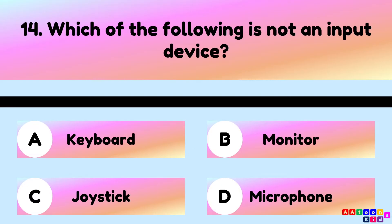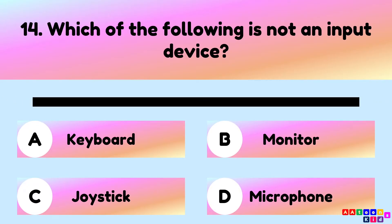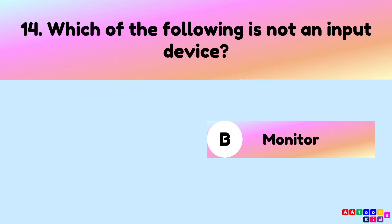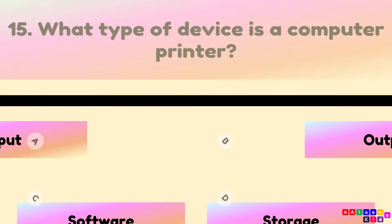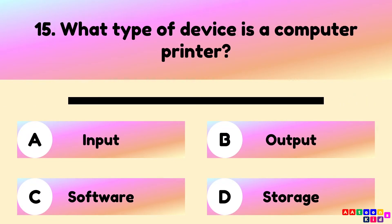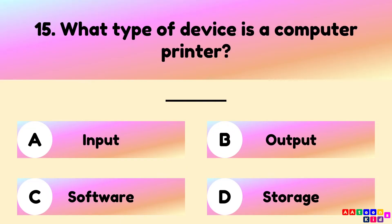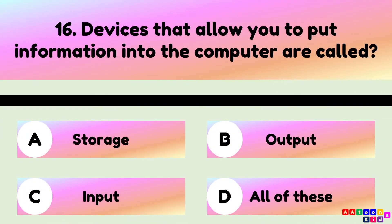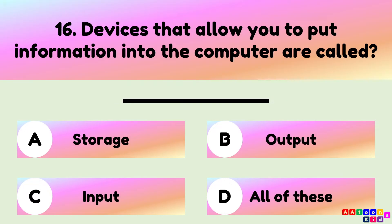Which of the following is not an input device? A computer printer is an output device. Devices that allow you to put information into the computer are called input devices.